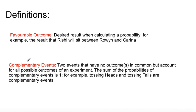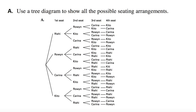Ask me in class and we'll go through it a bit more — don't worry, we will review this. Here we go. Question A: use a tree diagram to show all the possible seating arrangements. Ladies and gentlemen, this is all the possible seating arrangements — and this is also a tree diagram.